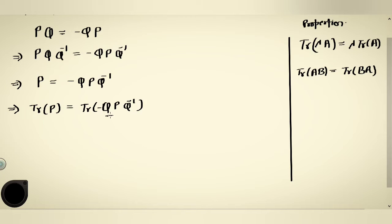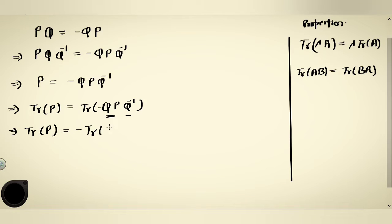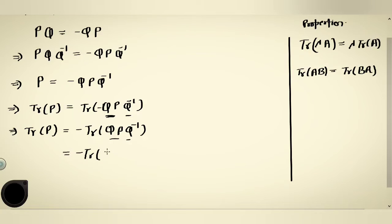Applying the first property, we bring out the negative sign: trace of P = -trace of QPQ inverse. Now treat QP as A and Q inverse as part of the cyclic property. Using trace(AB) = trace(BA), we get minus trace of Q inverse QP, and Q inverse Q cancels, giving minus trace of P.